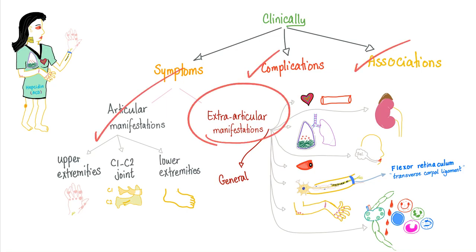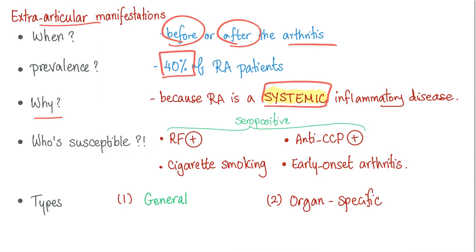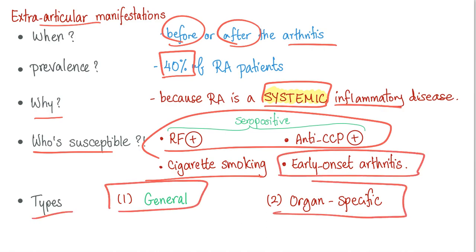Now let's talk about extra-articular manifestations. These symptoms may begin before or after the arthritis itself, with a prevalence of about 40% of patients, because rheumatoid is a systemic inflammation. Susceptible patients include those who are seropositive, cigarette smokers, and those with early-onset arthritis. Extra-articular symptoms are classified as either general symptoms or organ-specific extra-articular symptoms.